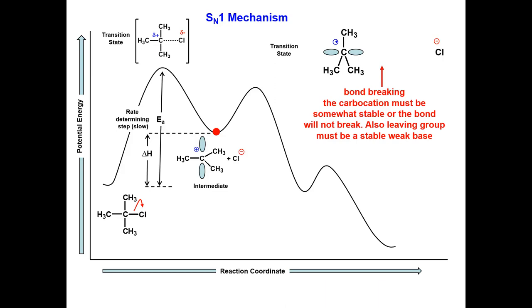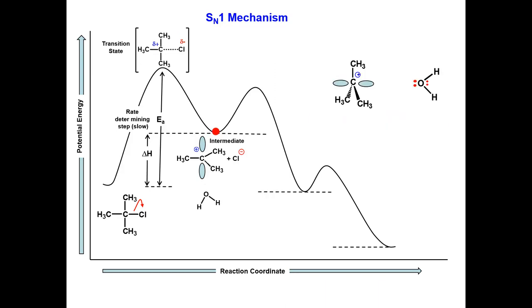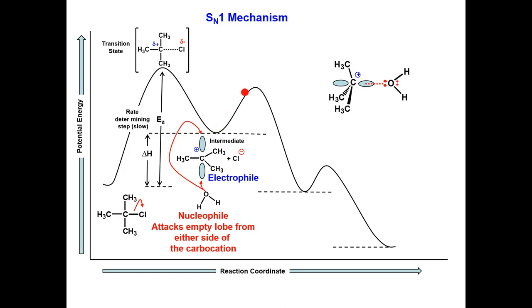Once the carbocation intermediate has formed, it can now act as an electrophile and accept electrons from a nucleophile. Water is present in this reaction, and even though it is a weak nucleophile, it will donate its electrons to the electrophile. The reaction can occur from either phase of the carbocation. The electrons are donated into the empty p-orbital of the carbocation.